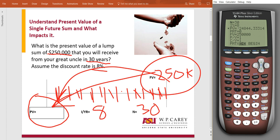Another way to think about this is, if you invested $24,844 today, in 30 years, if you could make 8% interest, it would be worth $250,000.